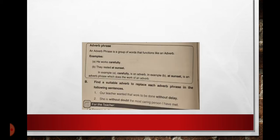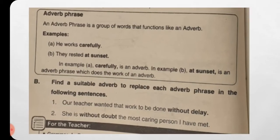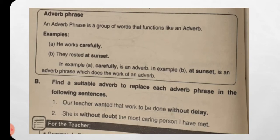Now we have adverb phrase. What is adverb phrase? An adverb phrase is a group of words that functions like an adverb. A group of words working as an adverb is called an adverb phrase. For example: 'He works carefully' — here 'carefully' is an adverb. 'They rested at sunset' — here 'at sunset' is an adverb phrase which does the work of an adverb.